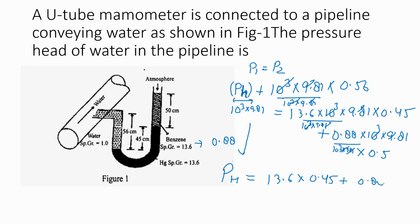So this converts into pressure head of water. It becomes 13.6 times 0.45 plus 0.88 times 0.5, and we bring 0.56 to the other side. Solving this equation gives the pressure head of water in the pipeline as 6 meters.